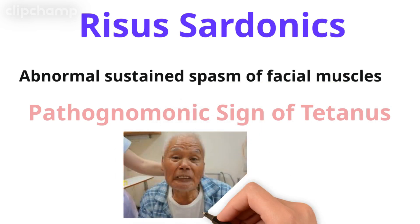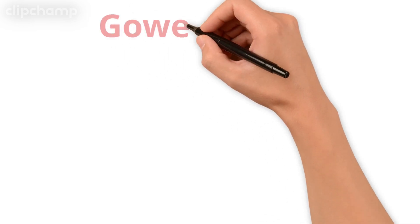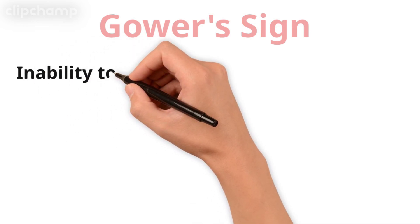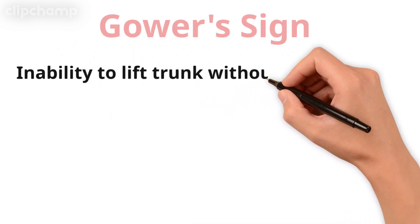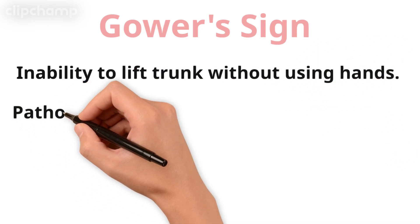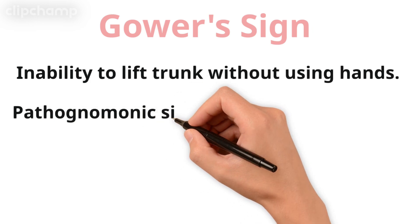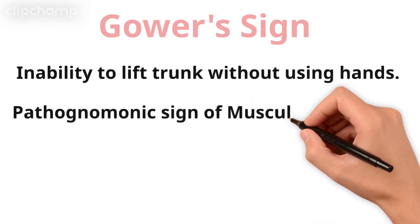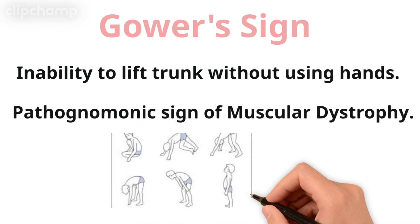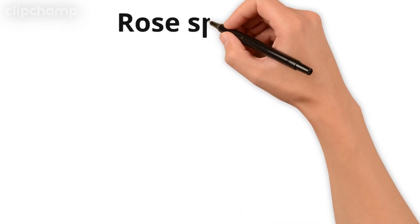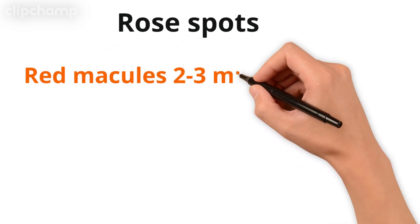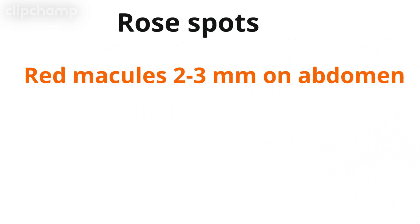Next is Gower's sign. Gower's sign is the inability to lift the trunk without using the hands — the patient cannot lift his trunk without using hands. This is the pathognomonic sign of muscular dystrophy. Here you can see the patient has to lift his trunk with the help of hands.